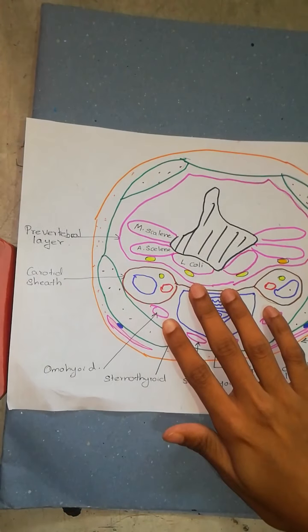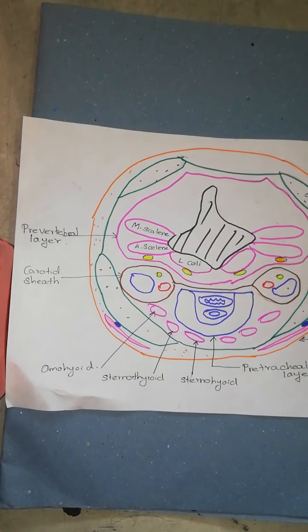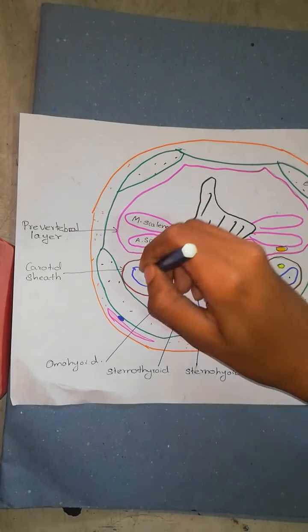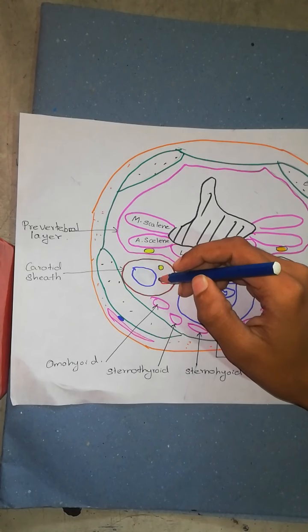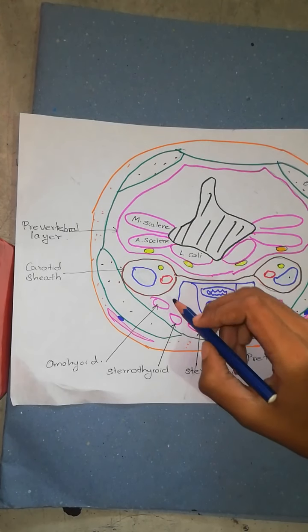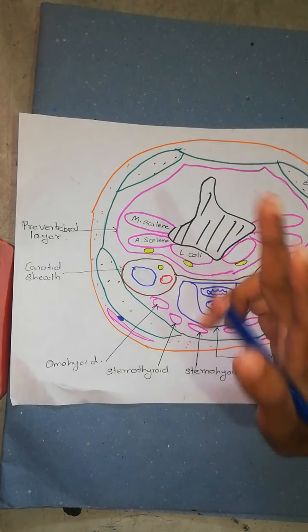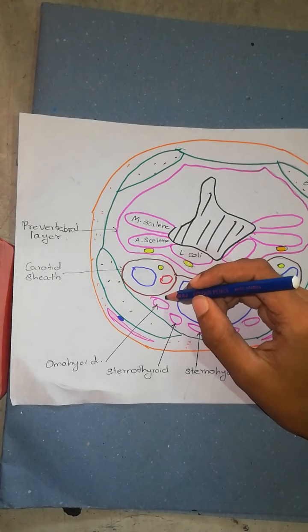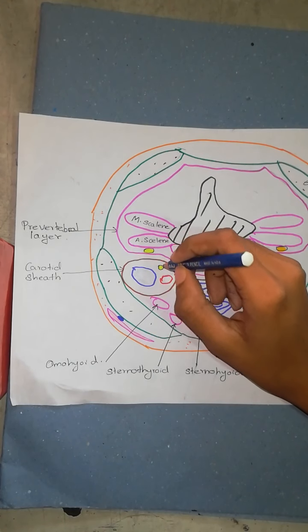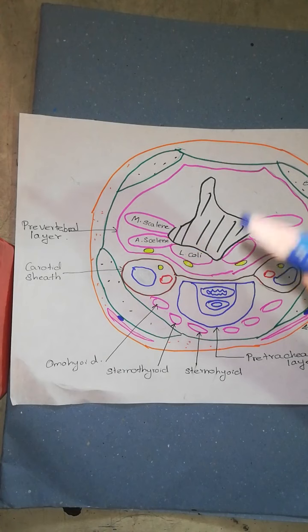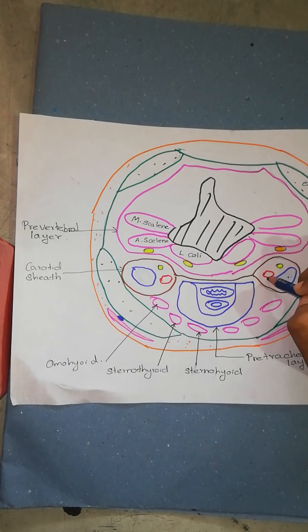To talk about the relations, let's go to the cross-section at C7 level. You can see the internal jugular vein here. It descends vertically in the carotid sheath, lateral to the vagus nerve. Here is the common carotid artery. At the C4 level it divides into two branches, and the internal carotid artery remains in the sheath. The internal jugular vein first lies lateral to the internal carotid artery and then becomes lateral to the common carotid artery within the carotid sheath, and its relations are therefore identical with these vessels.